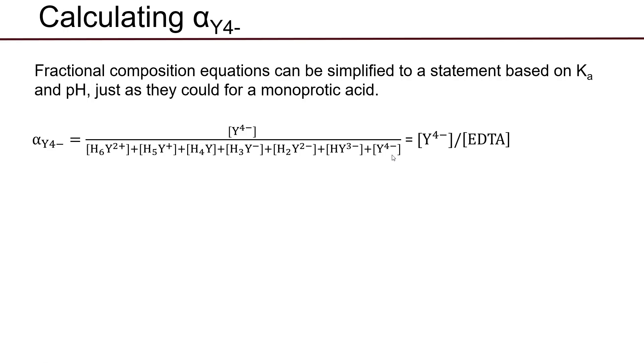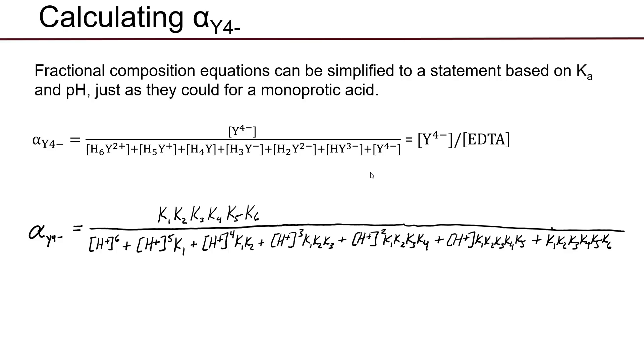For diprotic, triprotic, and even hexaprotic acids, there's a way of reducing this to a simple equation that only involves the pH of solution and the Ka value for each deprotonation, just like we did for the monoprotic acids in systematic treatment of equilibrium. And for hexaprotic acid, that expression for the alpha value looks like this.